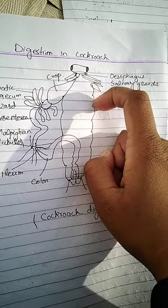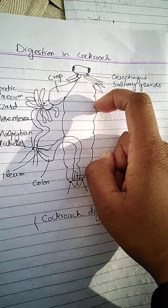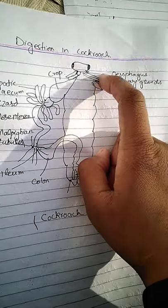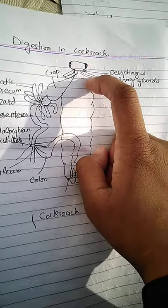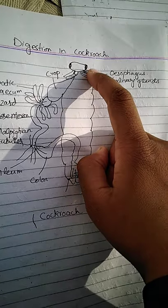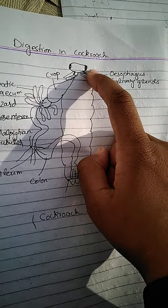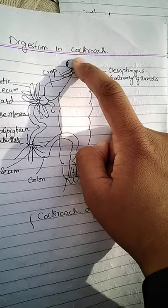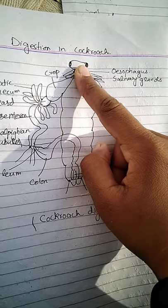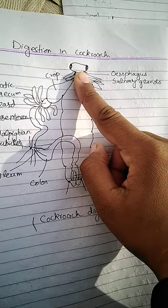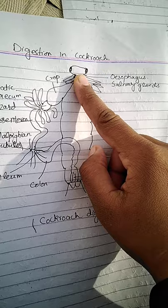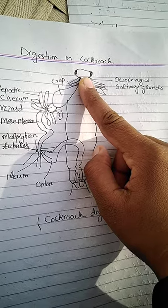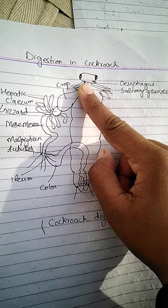The salivary gland is present in the region of the thorax and produces saliva which mixes with the food when it comes from the mouth parts. The chewing mouth parts and mandibles are strong for the purpose of chewing food.